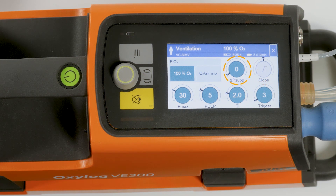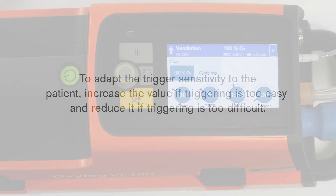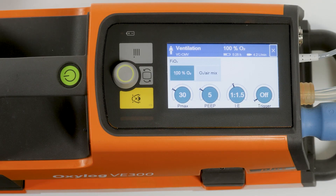rise time (Slope), and the pressure support delta P. When the trigger sensitivity is activated and set, the mandatory breaths are synchronized with the patient's inspiratory efforts. A low value corresponds to a high sensitivity.